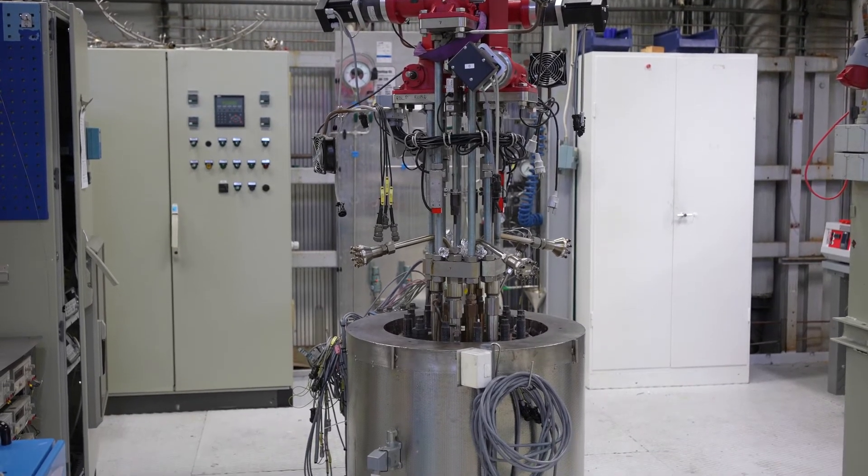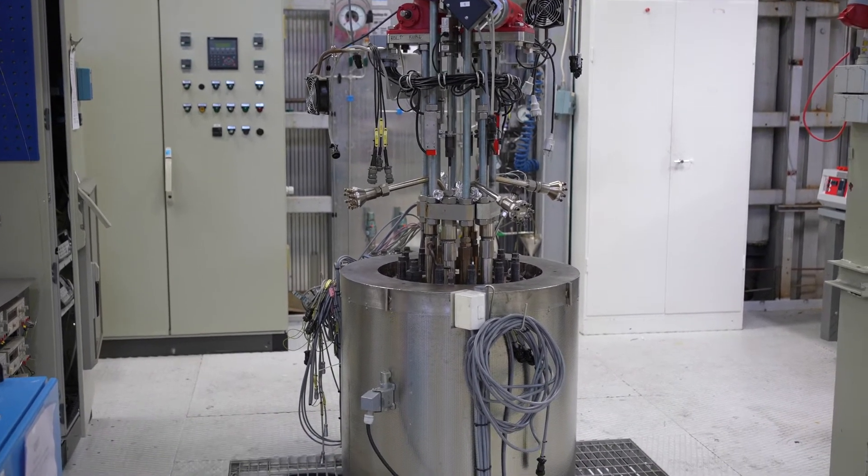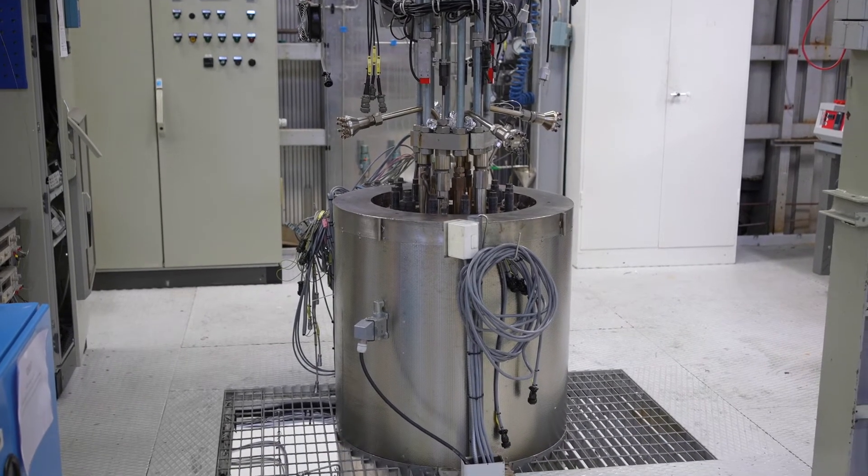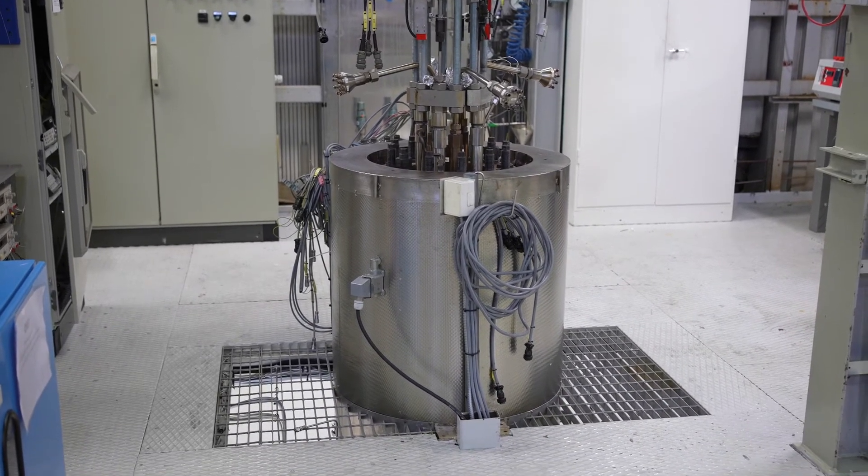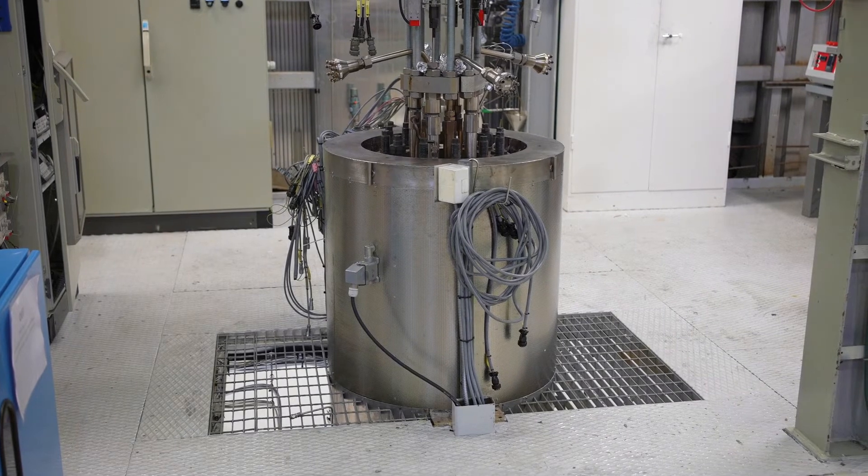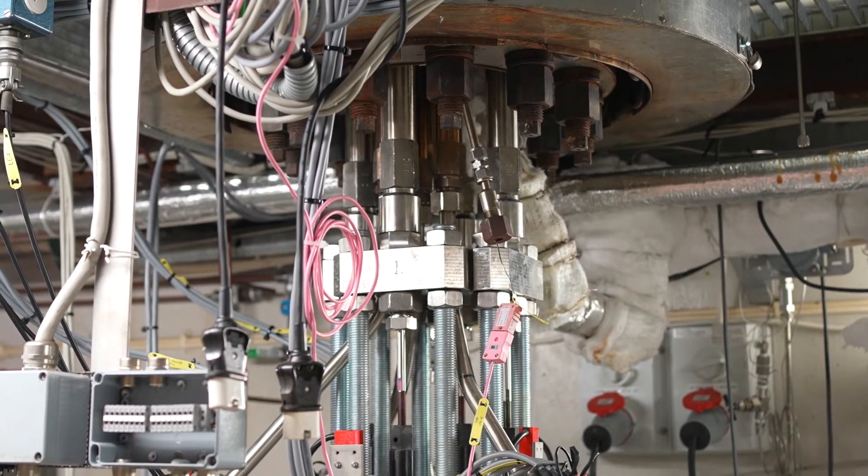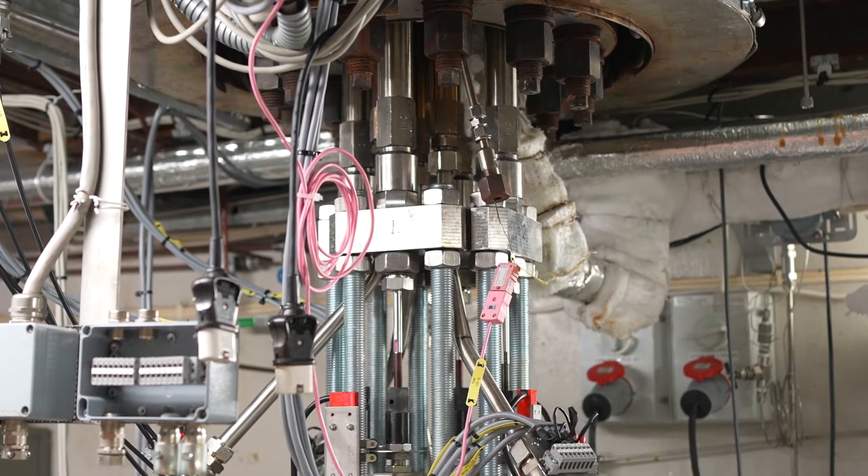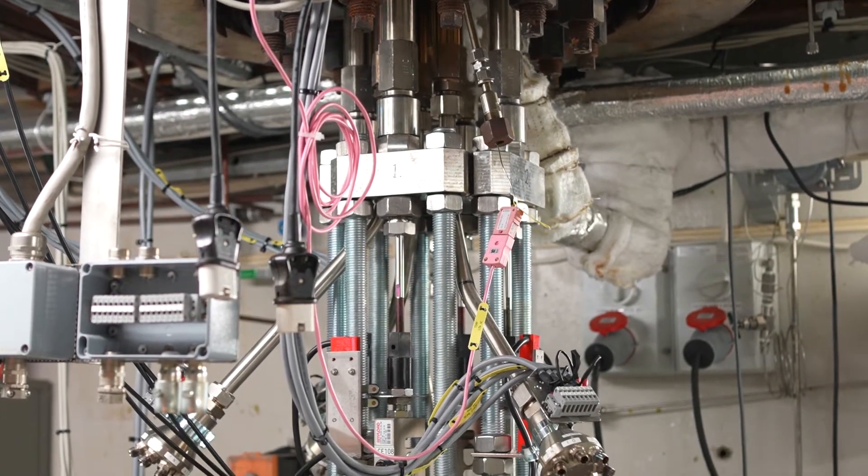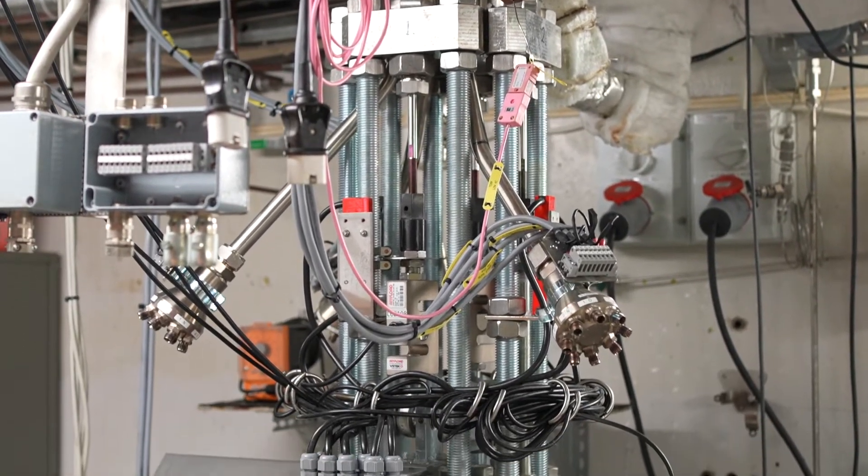This test system is designed for crack growth testing and is equipped with direct current potential drop for crack length monitoring. The autoclave has a free volume of 37 liters, and with a total of 8 pole rods, it is capable of testing at least 8 compact tension specimens individually and simultaneously in water environments.